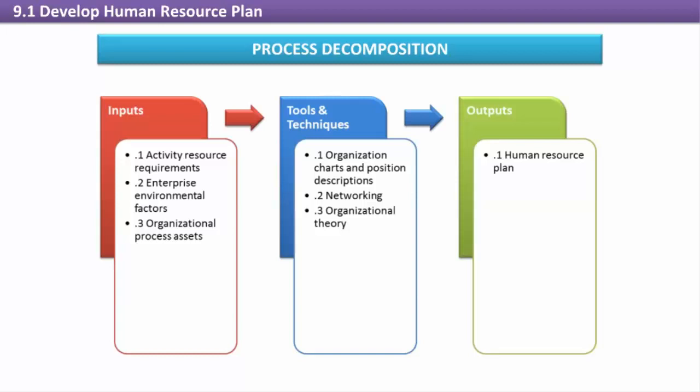In order to determine what kind of team the project will require, we need the Activity Resource Requirements (Section 6.3). From it, we will be able to determine the types of roles and skill sets the project staff must have to meet the project objectives. Lessons learned from prior projects should be reviewed by the project management team, as mistakes, issues, or situations encountered by other project management teams can help avoid similar events.